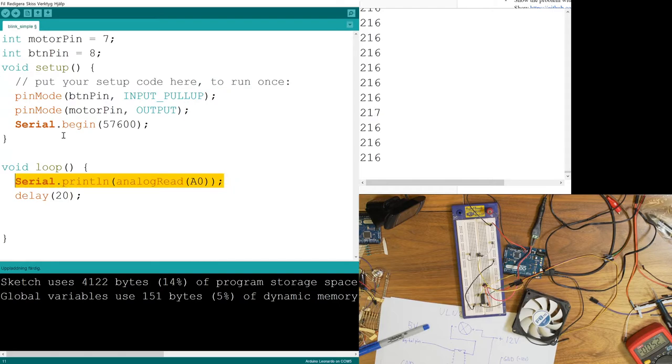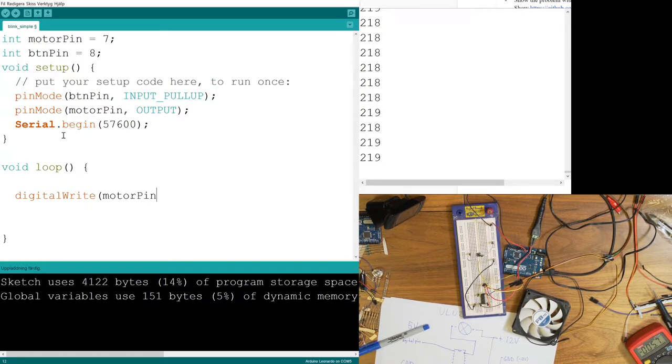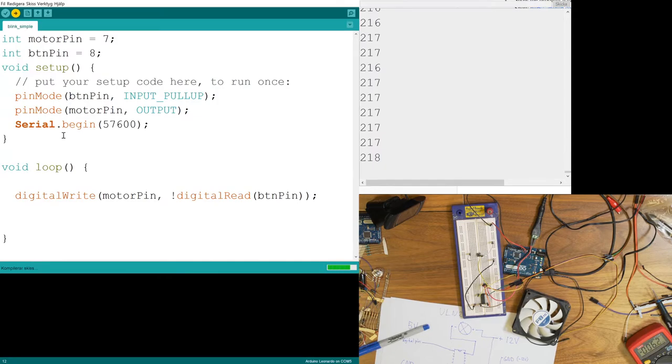And then, instead of doing this old code, I will just... Well, I will actually do digital write. I directly digital write to the motor pin. And I will take the inverted value of the button pin. And let's see if this works.